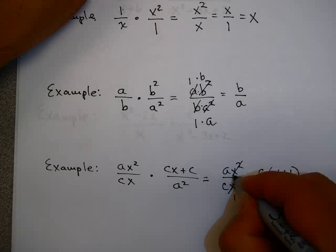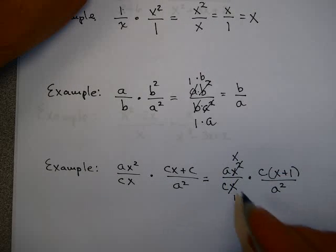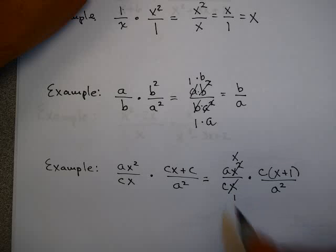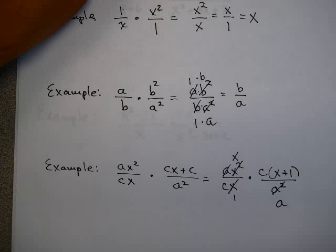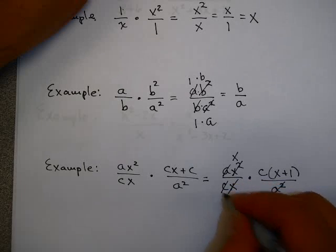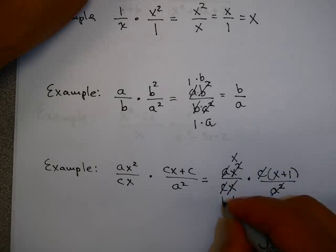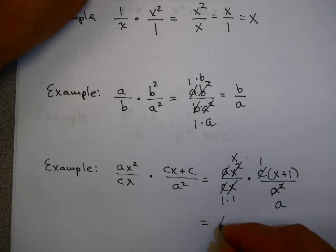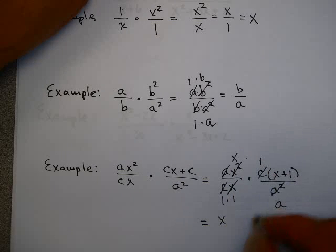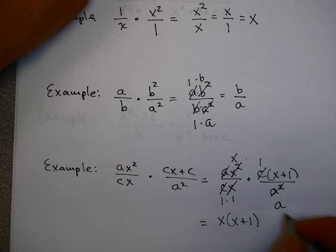x and x squared — I can cancel an x because x goes into x one time, and x goes into x squared x times. a and a squared — I can divide that out. And c and c — I can divide that out. So I end up with x times 1 times x plus 1 over 1 times 1 times a, and that would be my answer.